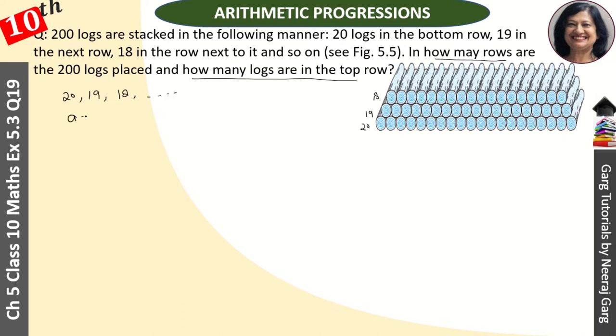So A is 20 and D is 19 minus 20, which is minus 1. A2 minus A1. And total logs we know: 200 logs. So SN is 200. We first need to find N. So we use the formula.